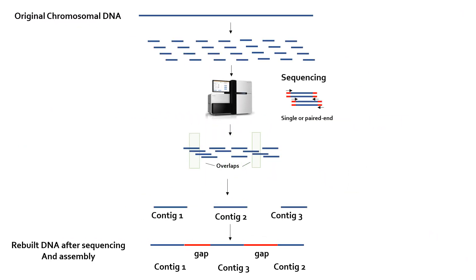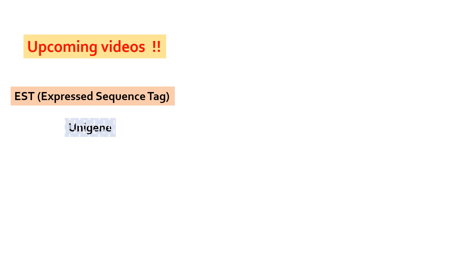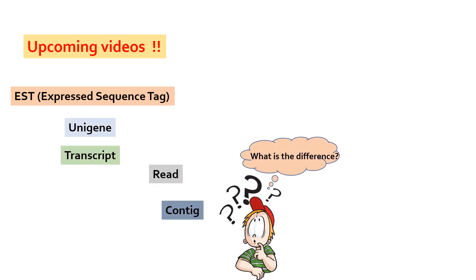I hope now you have learned what are short sequencing reads, the assembled contigs, and large scaffolds that represent chromosomal DNA. In my upcoming videos, I will explain about ESTs, unigenes and transcripts, and what are the basic differences among them. Stay connected.